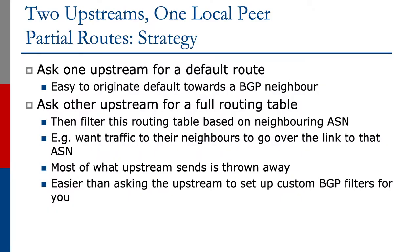We're now going to look at partial routes and what strategy we would adopt here. What we will do is ask one upstream provider for a default route, because a default route says I know how to get to the whole internet. It's easy to originate a default route towards a BGP neighbor — we've seen the one-line configuration earlier in this series. We still ask the other upstream provider for a full routing table, and then we filter it based on the neighboring AS or other policies that we want to implement.